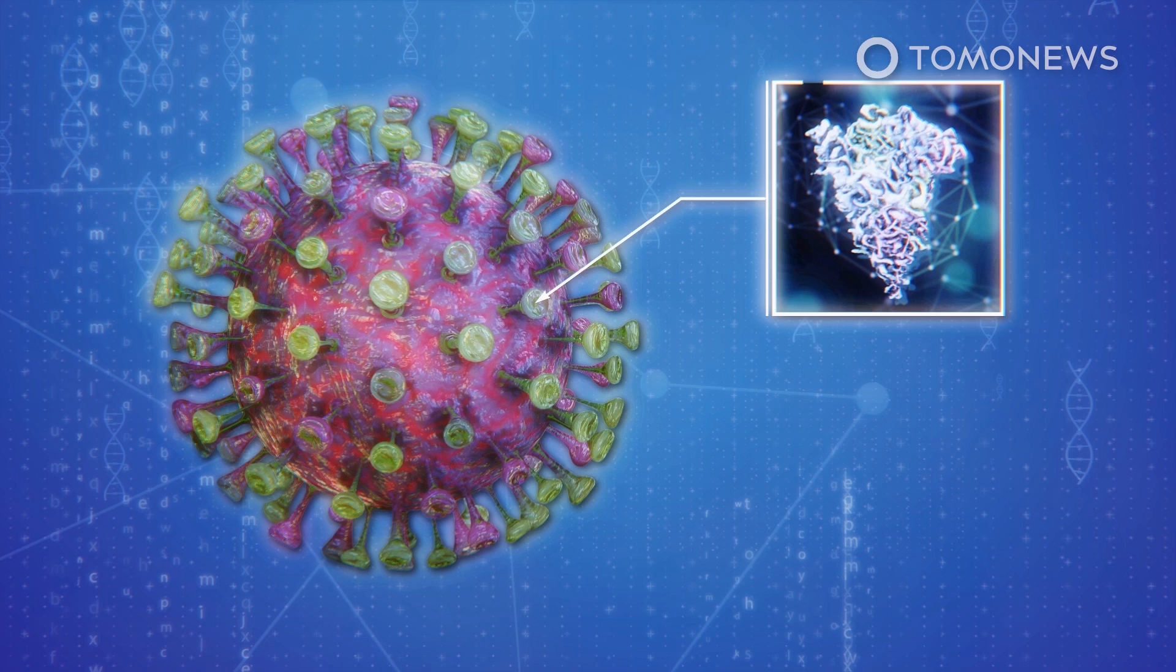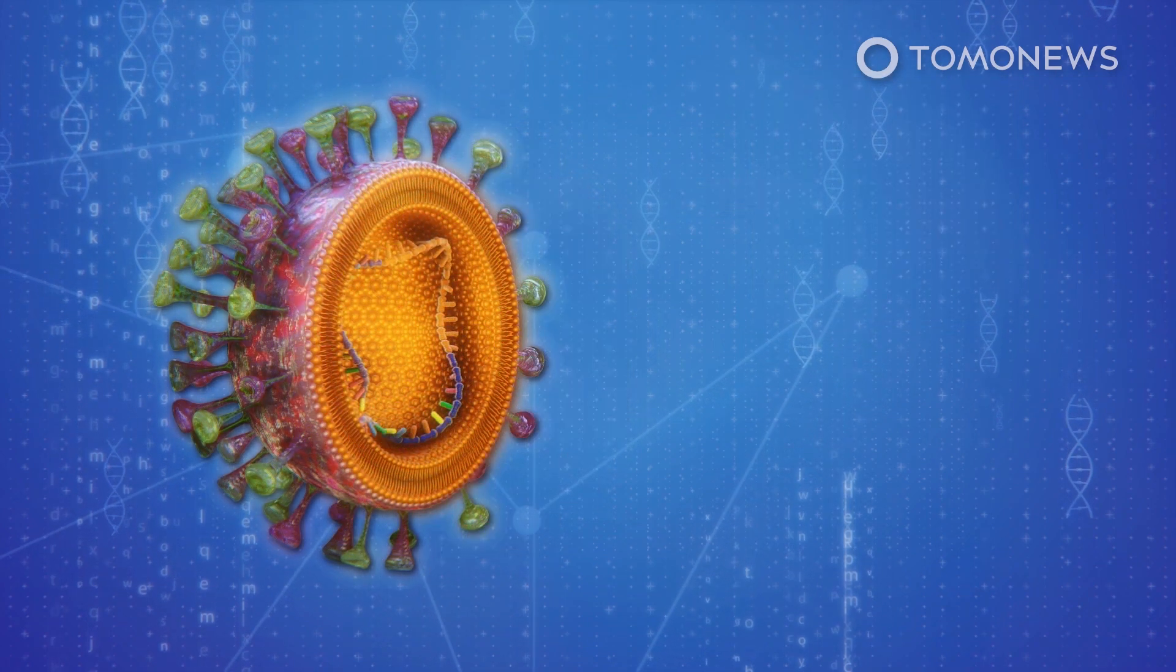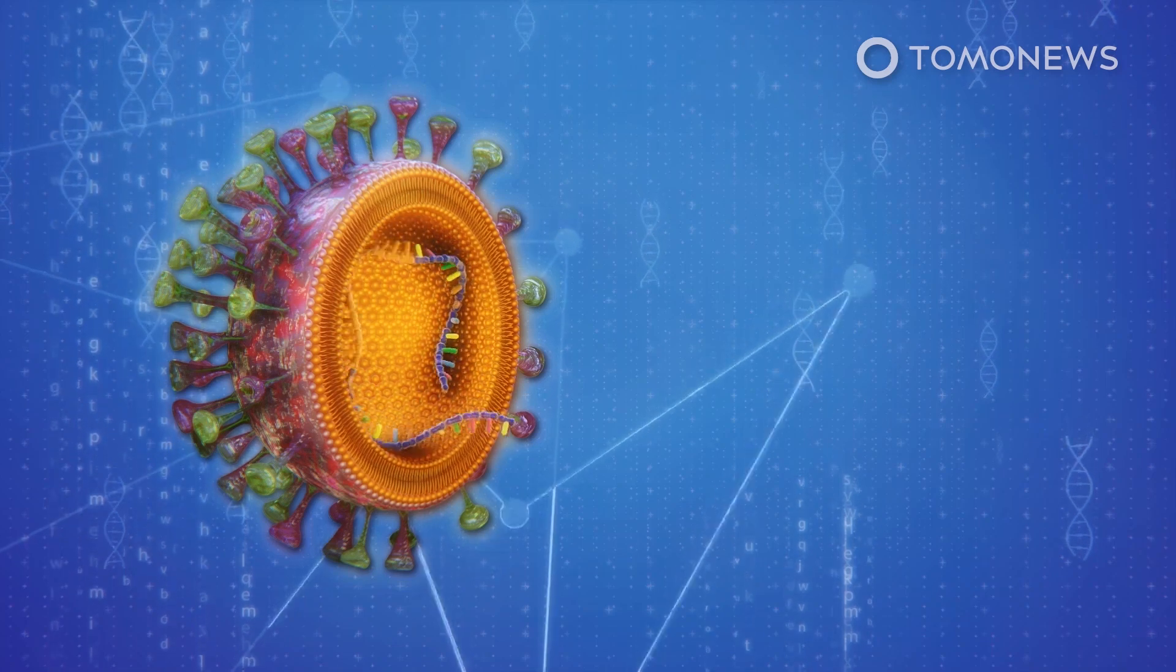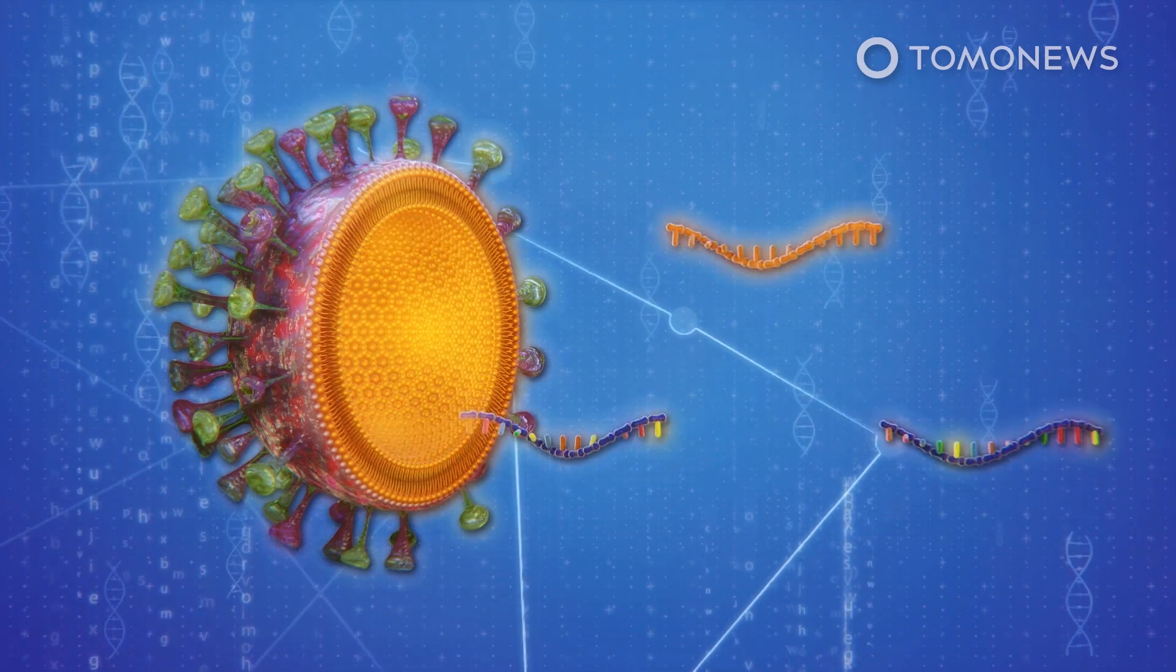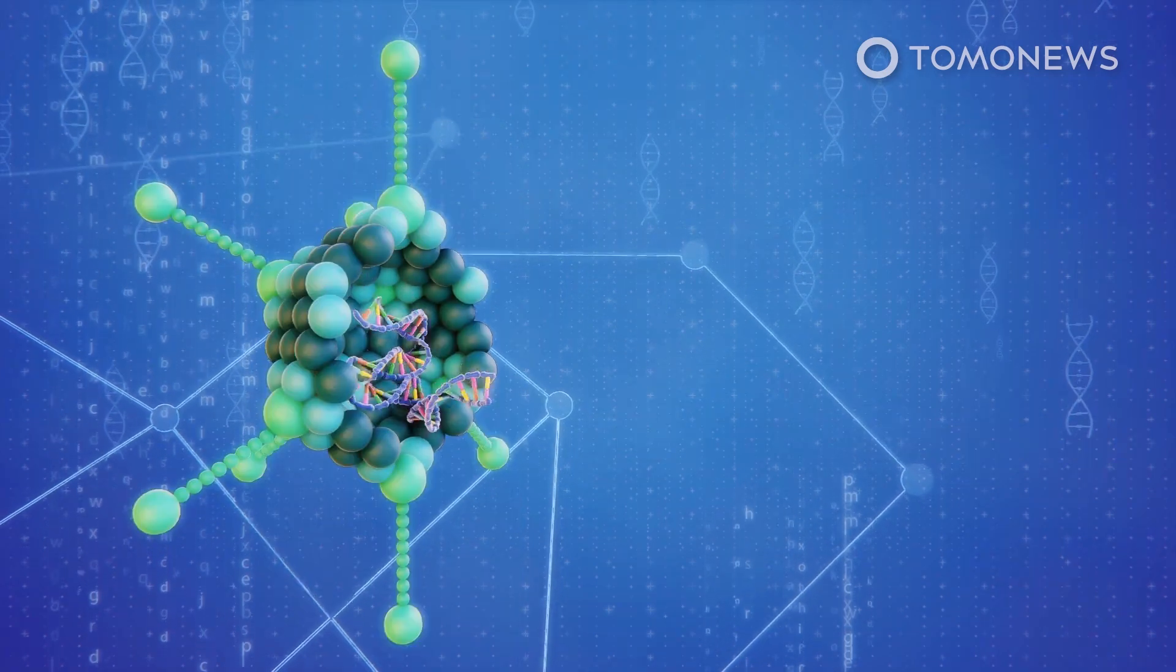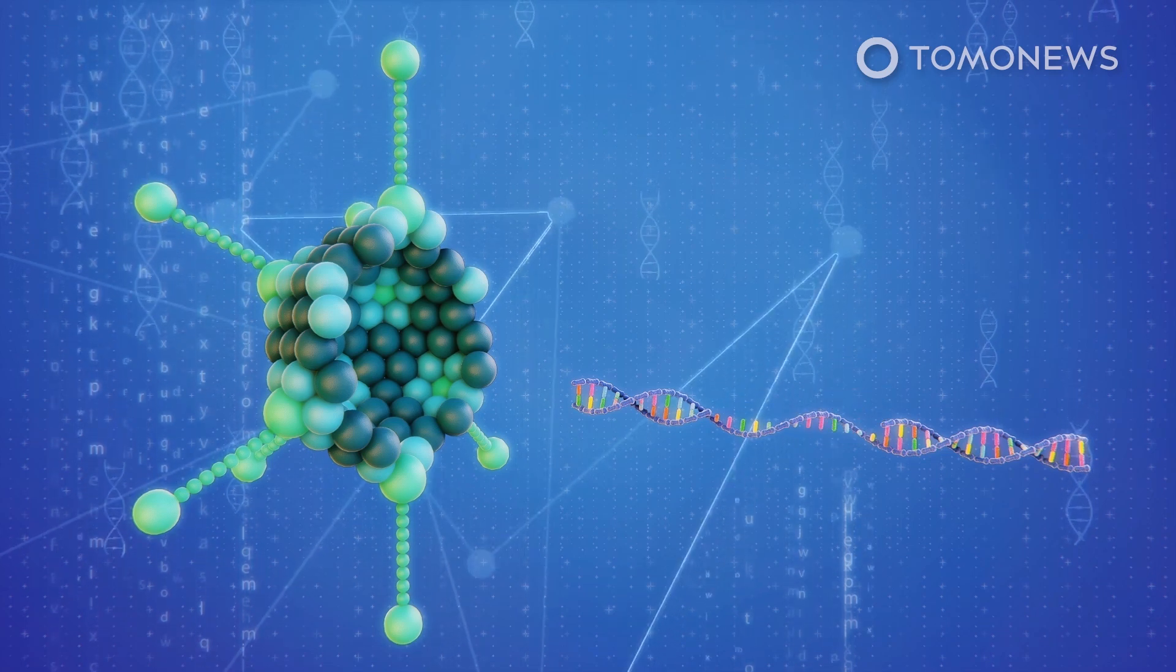The AstraZeneca-Oxford vaccine carries a gene with the code for the spike protein that the coronavirus uses to enter a human cell. The spike protein gene is cut from the coronavirus and inserted into a vector, a virus that is weakened so that it cannot grow inside the human body after injection.